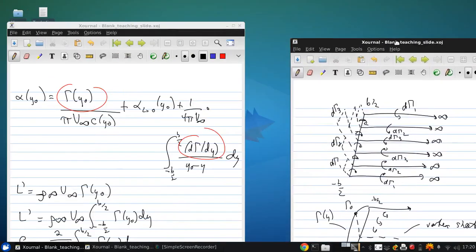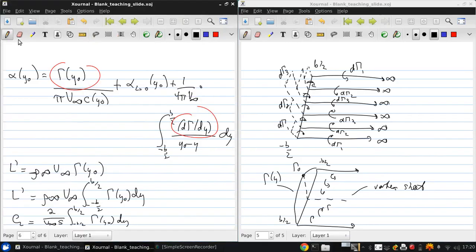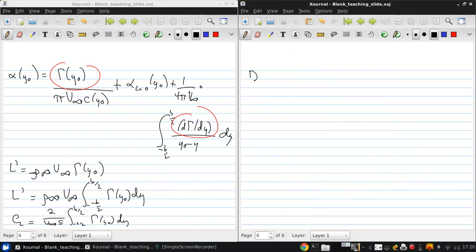Finally, the induced drag D i is rho infinity V infinity times the integral from negative B over 2 to B over 2 of gamma of y0 alpha i of y0 dy0. We're still missing this distribution of circulation, which is the key to getting values for all these things.